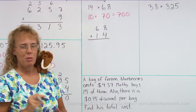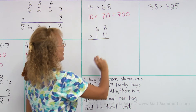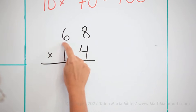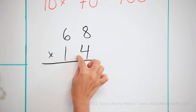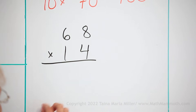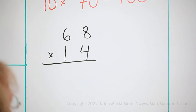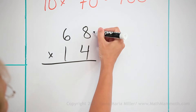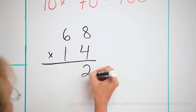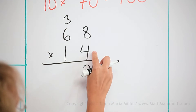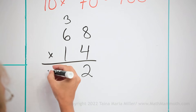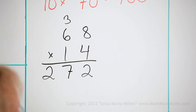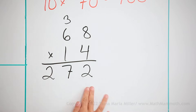Now, do you remember how this was done? We first multiply 4 times 68 normally. Then we multiply 10 times 68, write it underneath, and lastly add. So I have 4 times 8 is 32, and 4 times 6 is 24 plus 3 is 27. So that's the multiplication ignoring the tens digit — just 4 times 68.